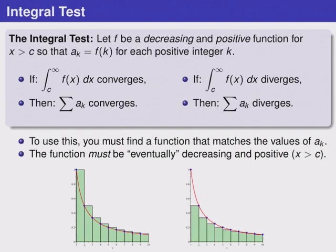In order to use this, we have to find a function that matches the values of a_k. And the function must be eventually decreasing and positive. That is, it's decreasing and positive as long as we're to the right of some x value.